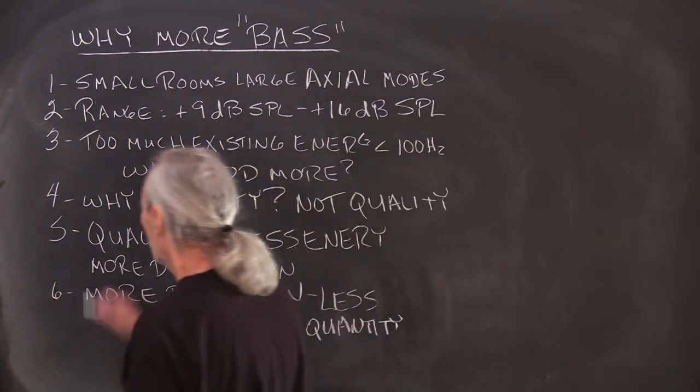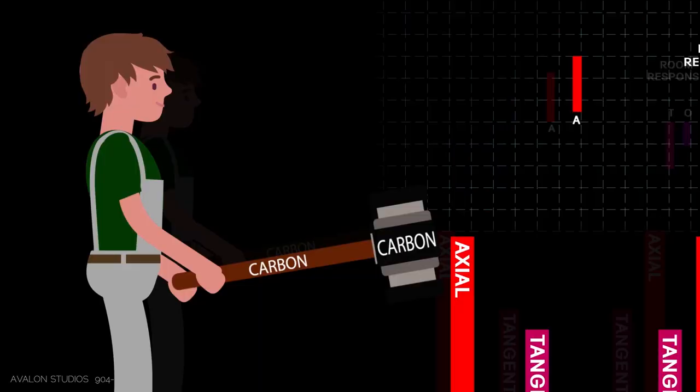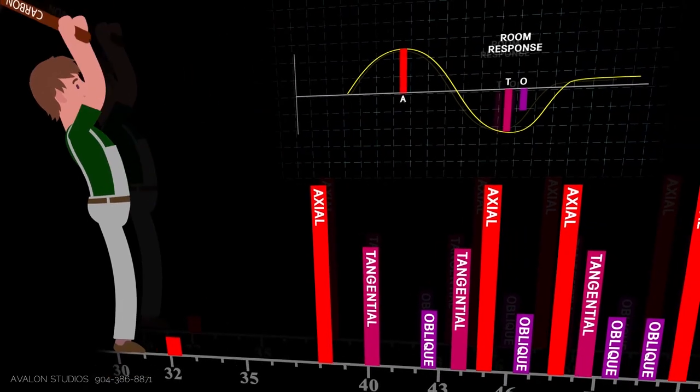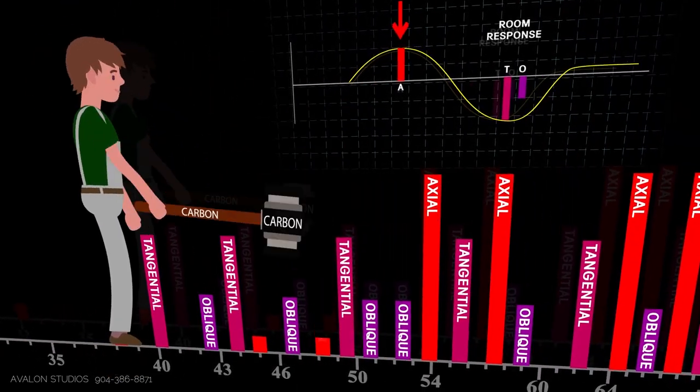So what do we have to realize here? We have to realize that small rooms have large axial mode problems. We know from past videos that axial modes are between two parallel surfaces: two side walls, front and rear, floor and ceiling.